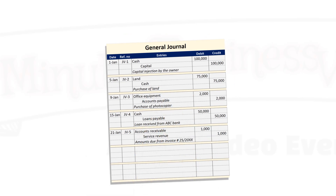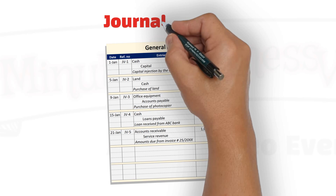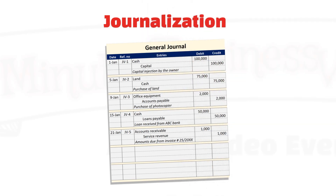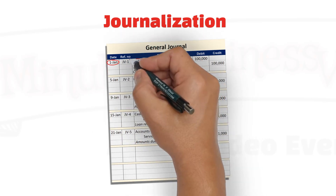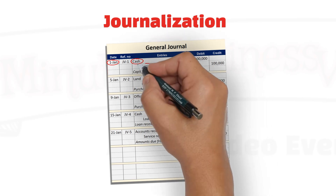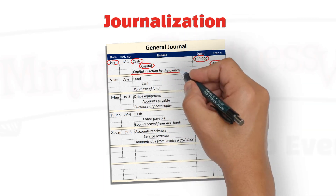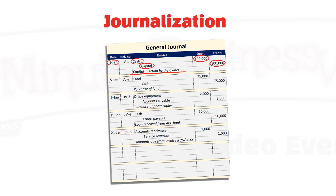Accountants record the transactions in journals like this one here, and that step is known as Journalization. A journal is a detailed record of all the financial transactions of the business. It shows the date of the transactions, the accounts affected by the transactions and by what amounts, along with a brief description of the transaction.